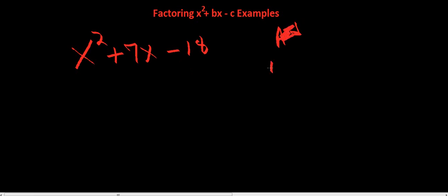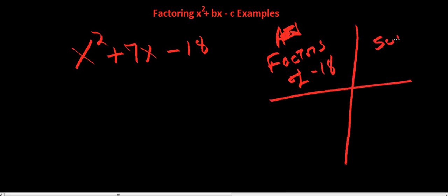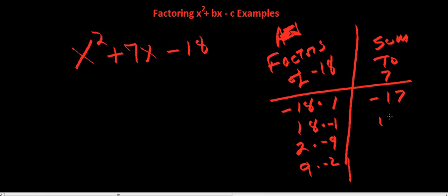We want factors of negative 18 that sum or add to 7. So you can do negative 18 times 1, 18 times negative 1. You can do 2 times negative 9, or 9 times negative 2. List some of the factors, add them together. And this one here adds up to 7, so we know our factors are going to be this.